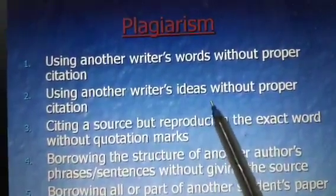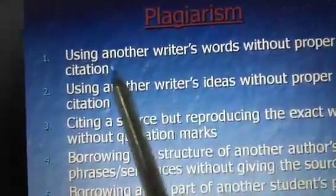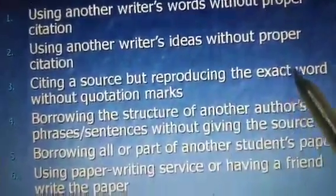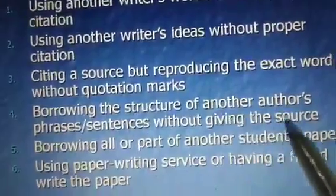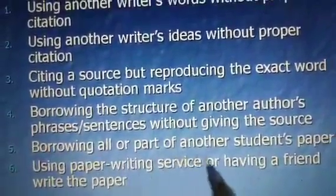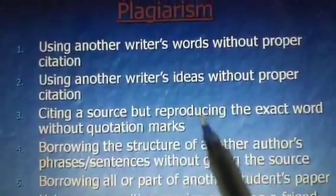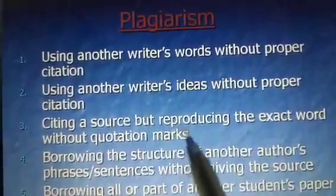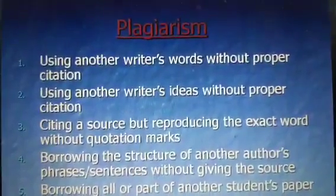Before doing the review of literature, you must learn the term plagiarism. Plagiarism means using another writer's words without proper citation, using another writer's ideas without proper citation, citing a source but reproducing the exact words without quotation marks, borrowing the structure of another author's phrase or sentence without giving the source, borrowing all or part of another student's paper, or using a paper-writing service. A researcher must be honest — if you use someone's words or ideas, you must make a reference or give your sources.